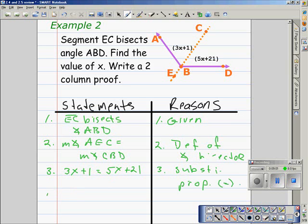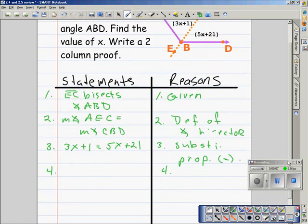Now, step four is going to be justified by the subtraction property. Some of you might be thinking, what the heck is going on? So let me show you what the heck is going on.